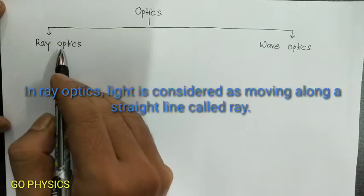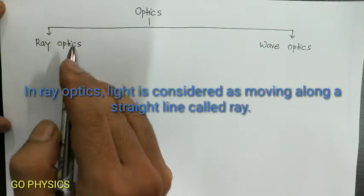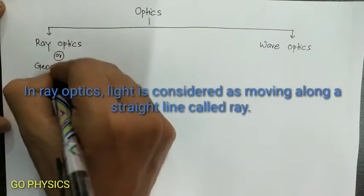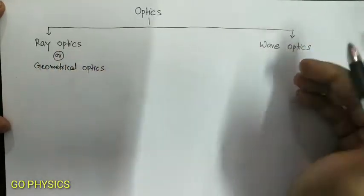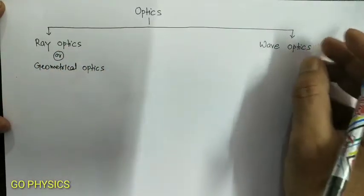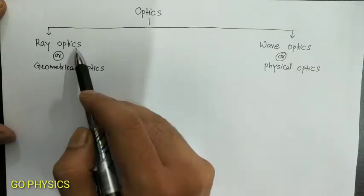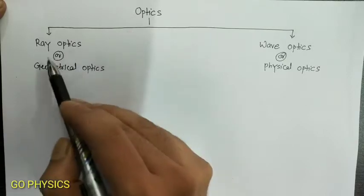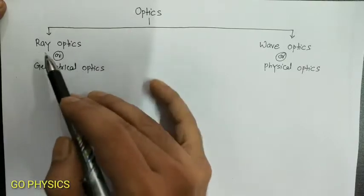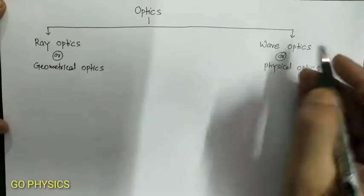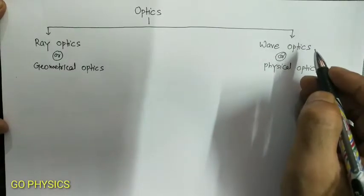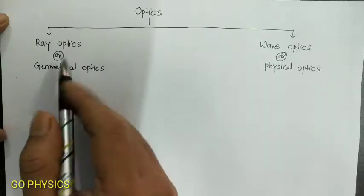Ray optics is also called geometrical optics, and wave optics is also called physical optics. While studying ray optics we consider light as rays, and while studying wave optics we consider light as waves.